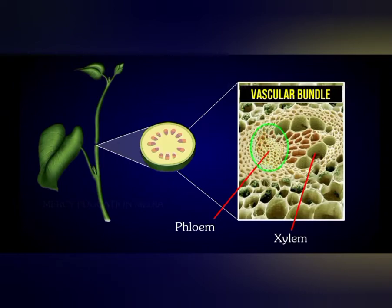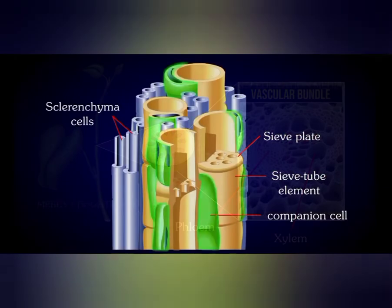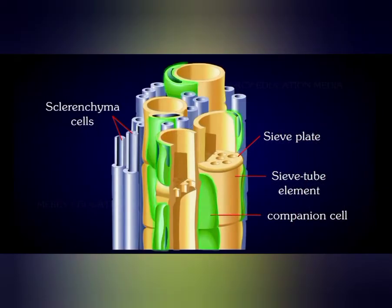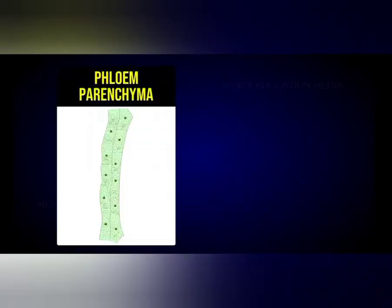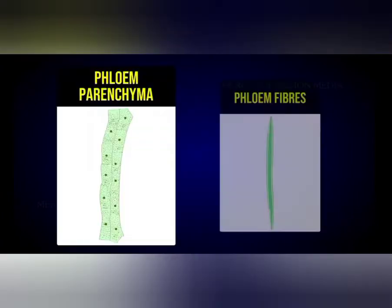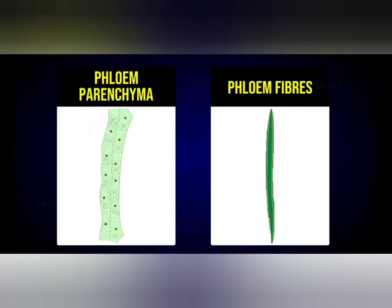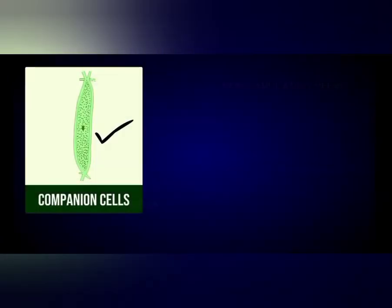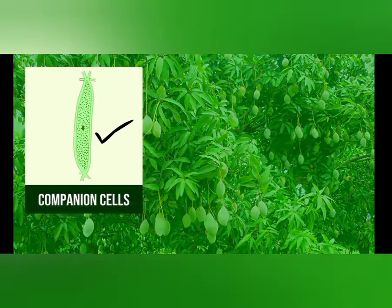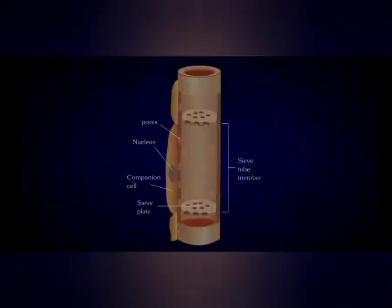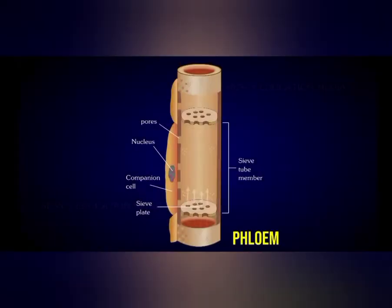Phloem and xylem together are called as vascular bundles or vascular tissues or conducting tissues. Now coming to phloem, phloem generally contains different parts like phloem parenchyma, fibers, sieve tubes and companion cells.